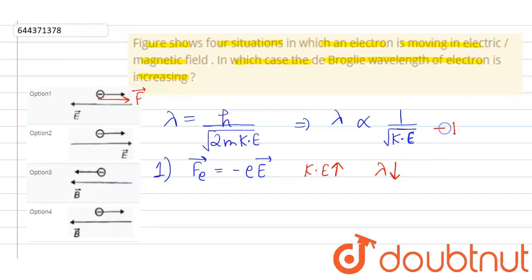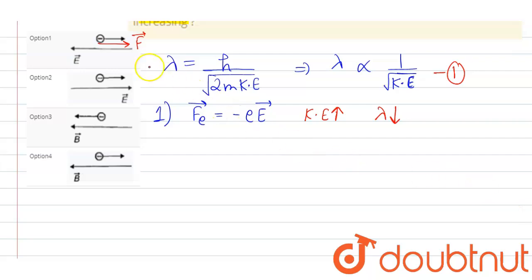Now for second part, the force experienced by the electron will be in this direction opposite to electric field. Electric field is in right, so force will be left, due to which the kinetic energy of electron decreases.